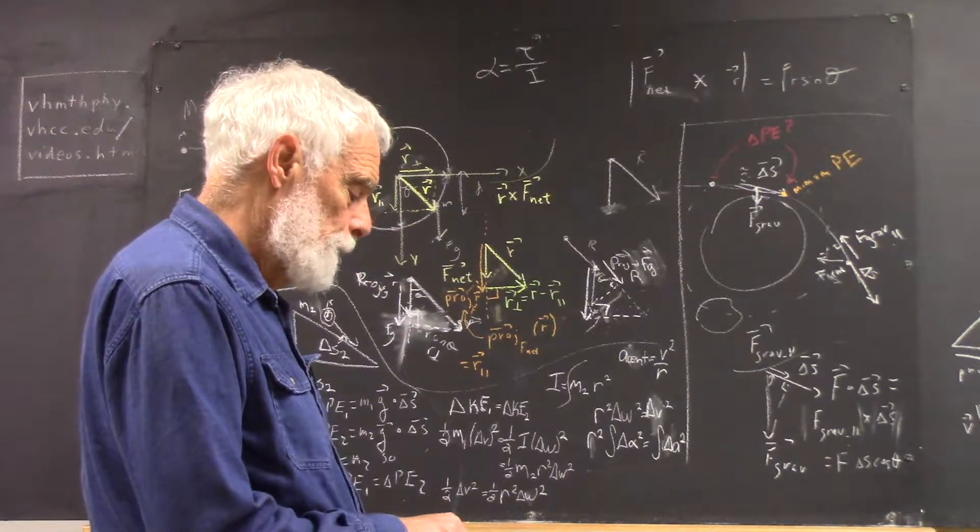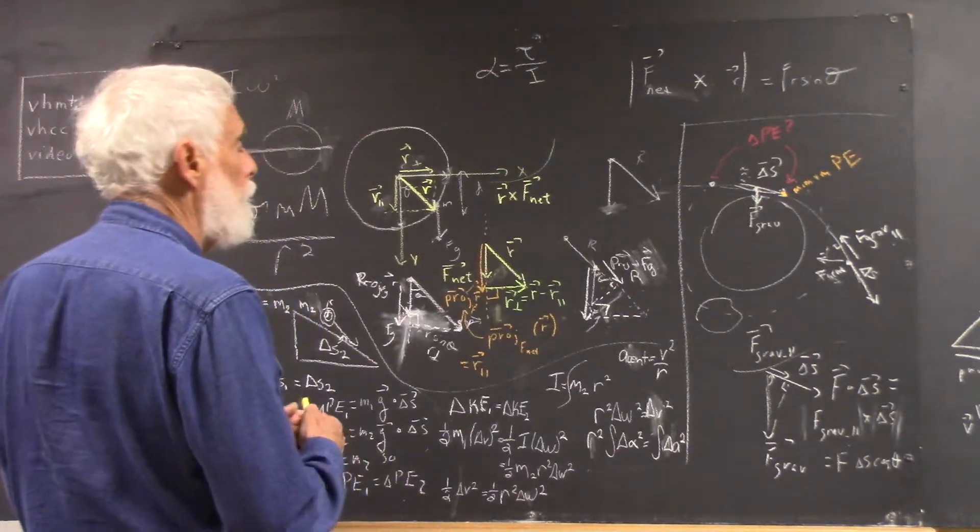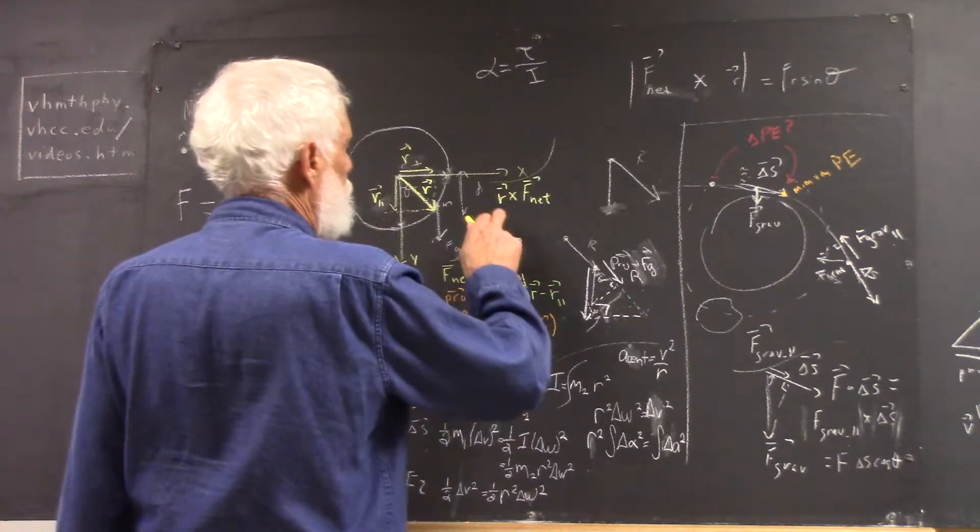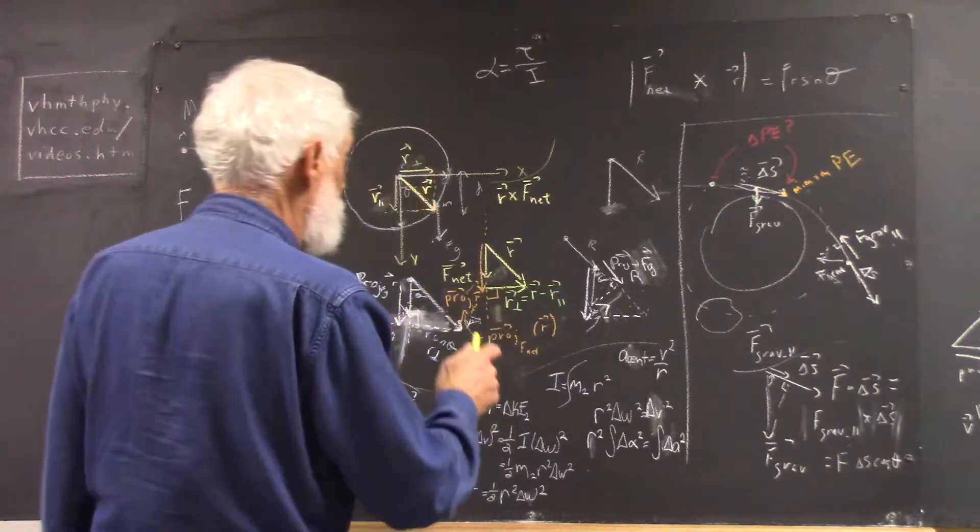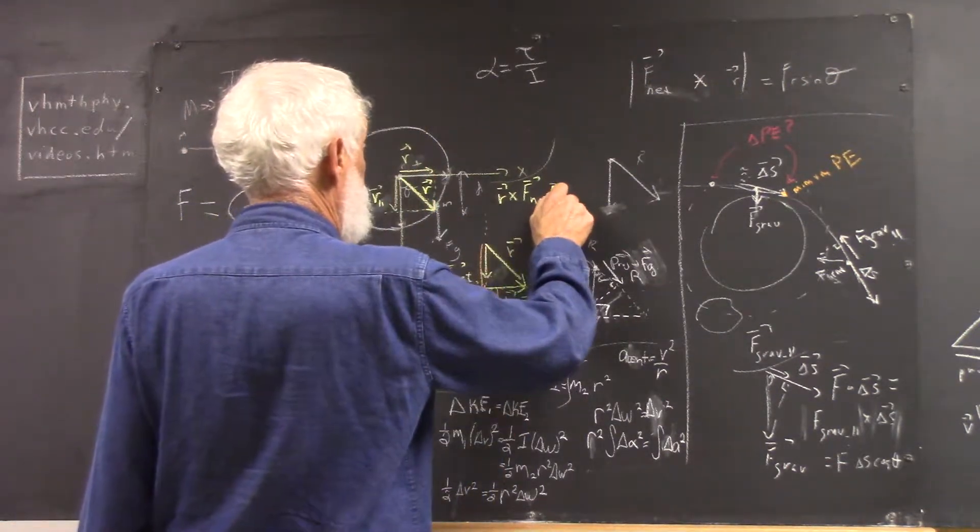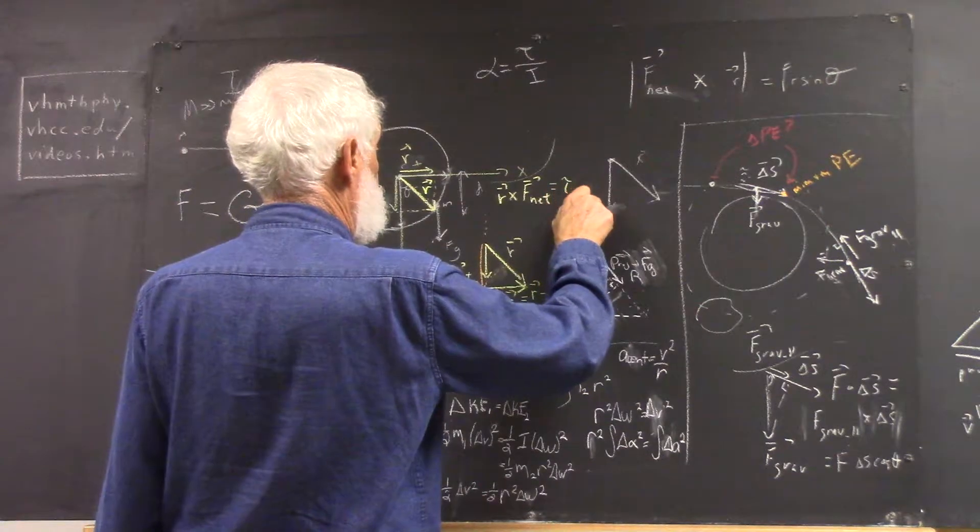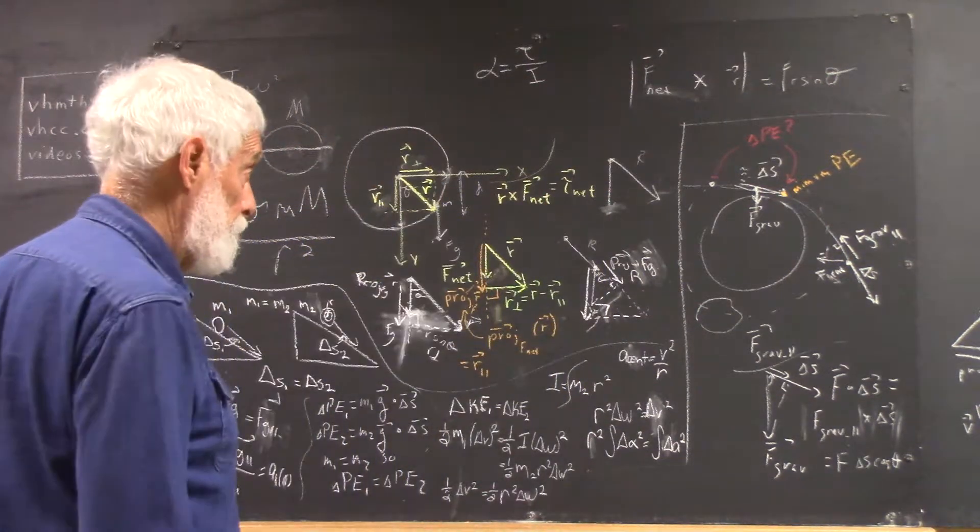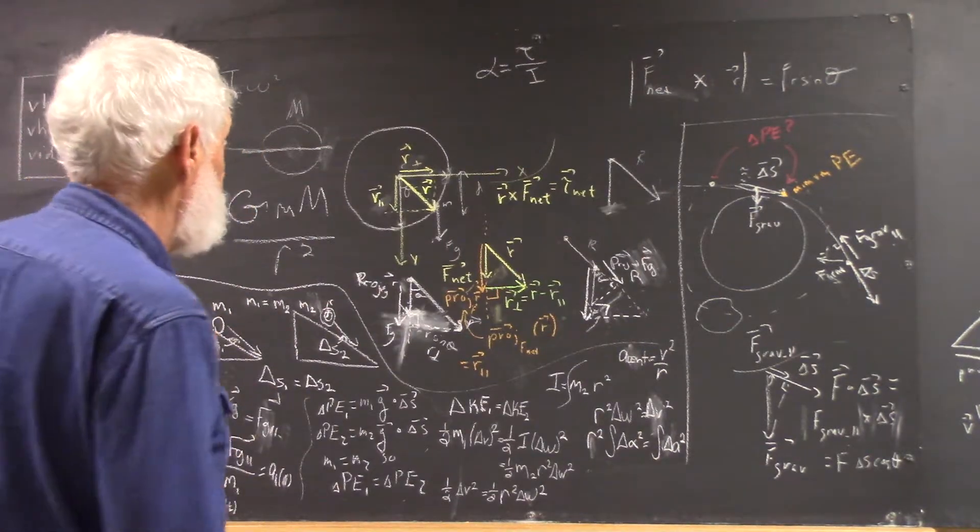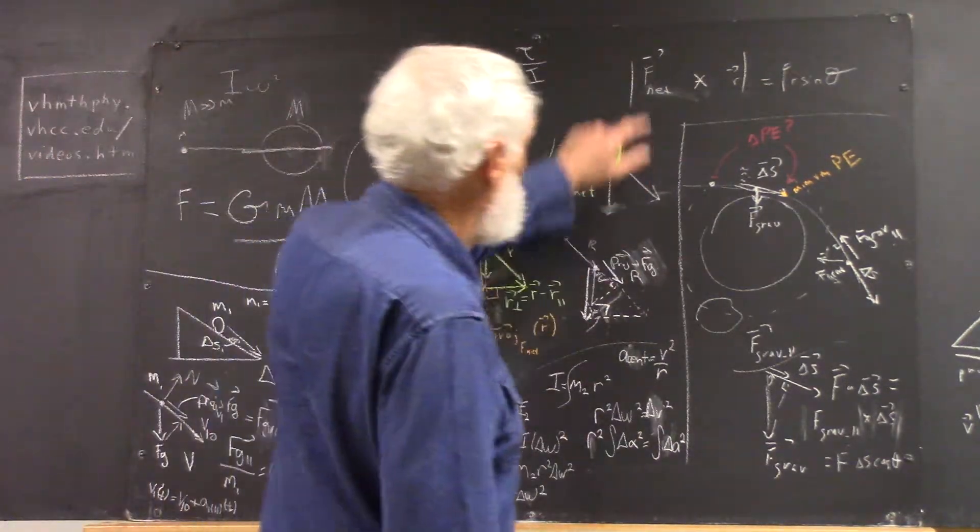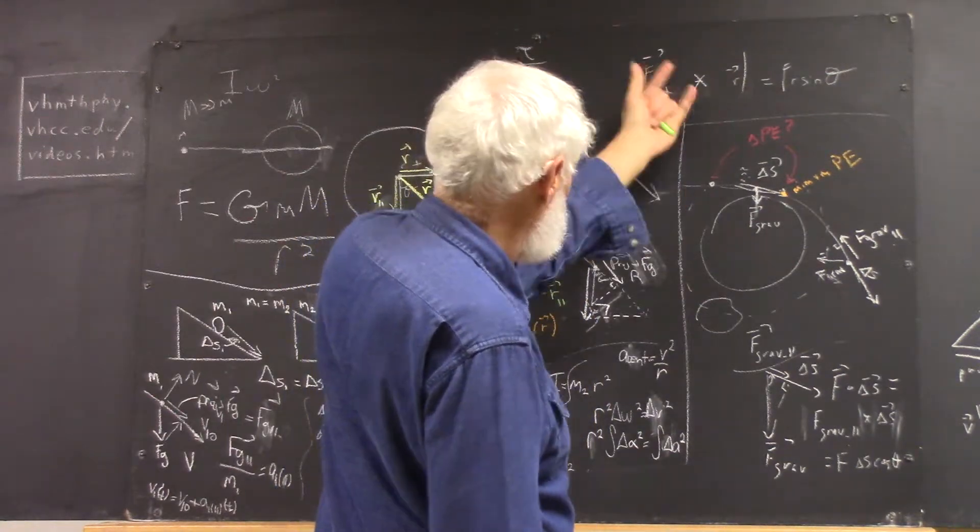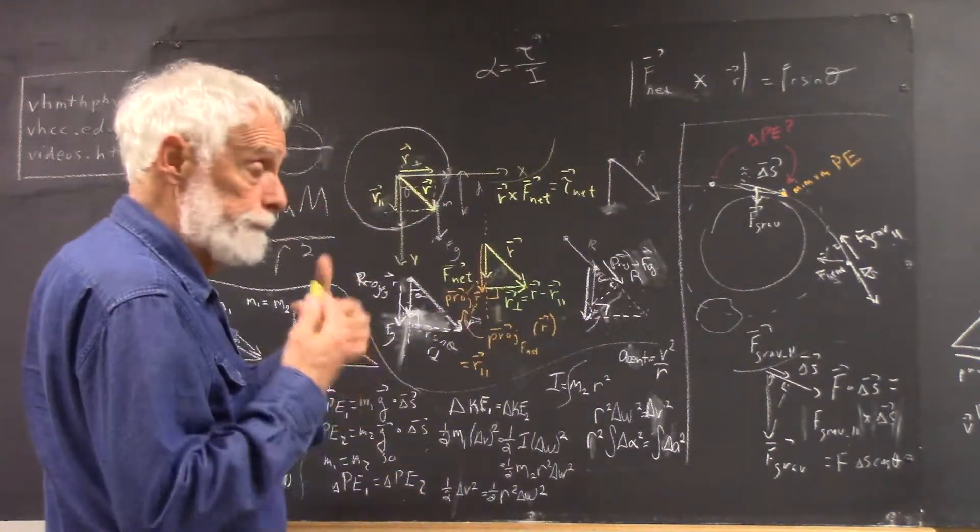Now, why is that important? Well, we're trying to calculate the cross product of r with f-net. Why? Because that's the net torque that accelerates the system. Okay. Now, we've got this formula for magnitude of r cross f-net, even though it was written backwards here and on my paper.